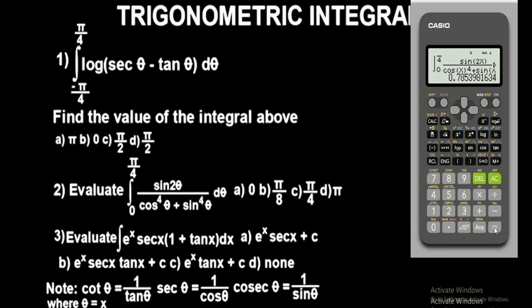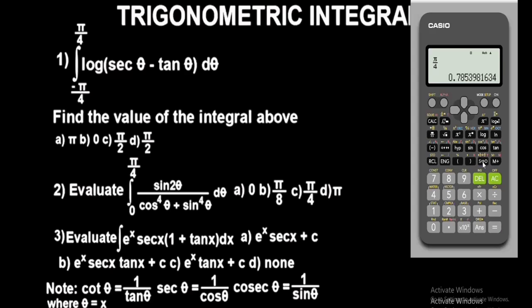We get 0.78. The options are in terms of pi, so let's evaluate them to decimals. Option B is pi over 8 — press the S-to-D button — that gives 0.39, not matching. Let's check Option C: pi over 4 — press S-to-D — that gives 0.78. The correct option is Option C.